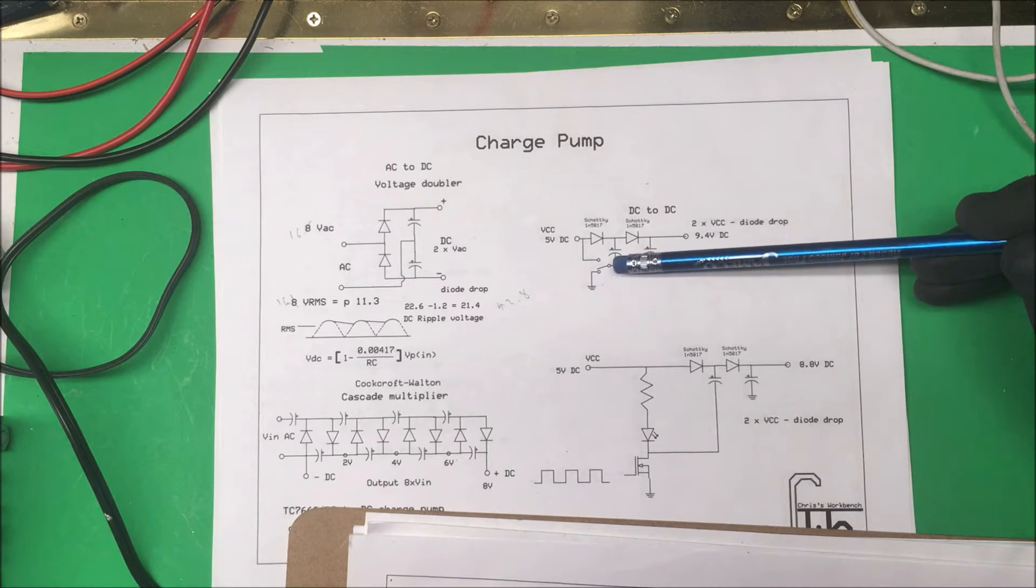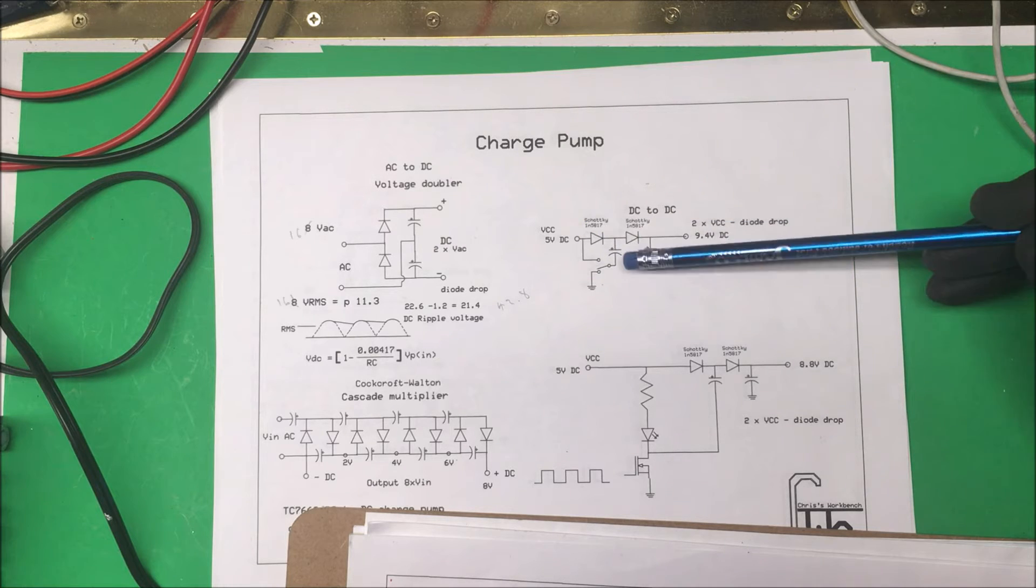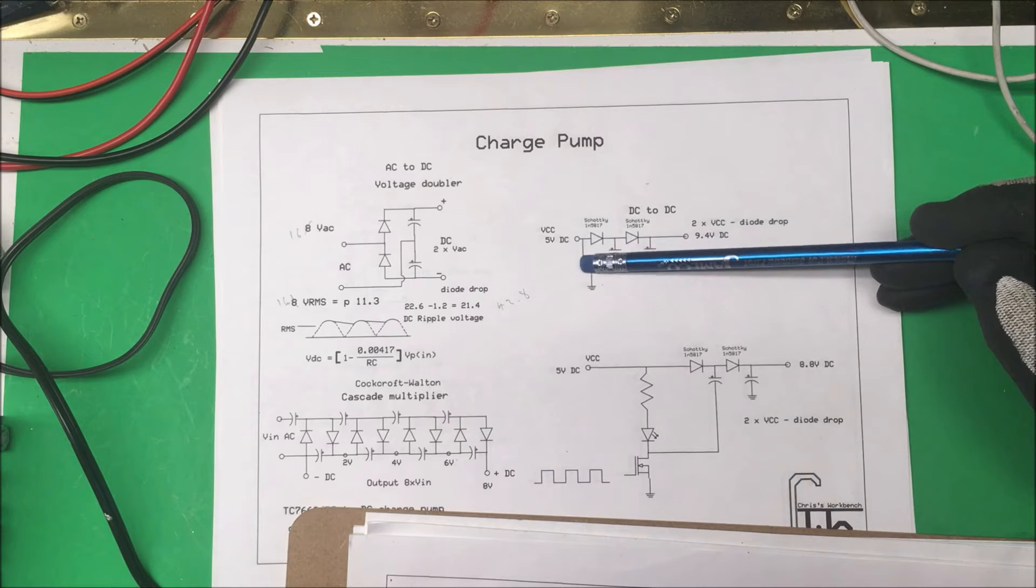When we put this switch back up to the 5 volt rail, we have this capacitor charged at 5 volts, and then we add this other 5 volts here and that makes 10 volts. It comes over here and charges this capacitor up to 10 volts.